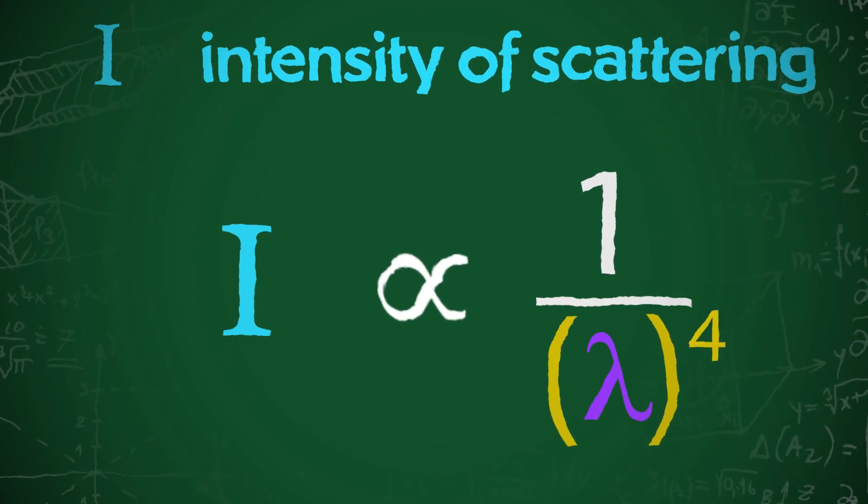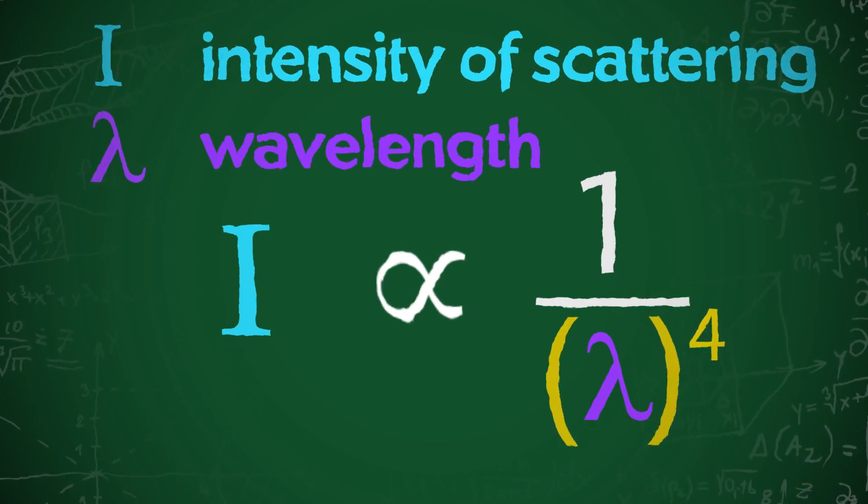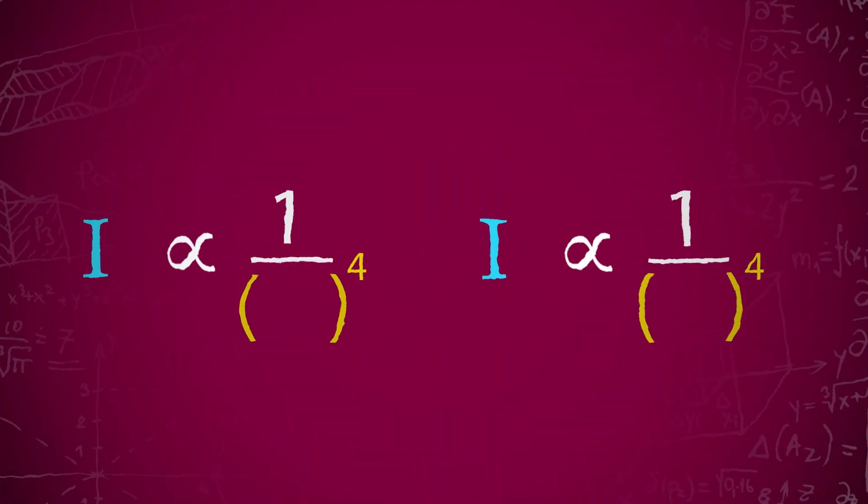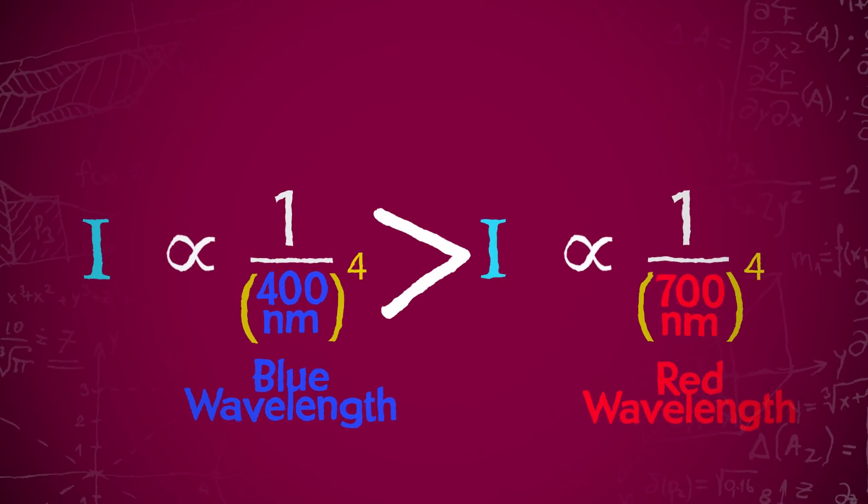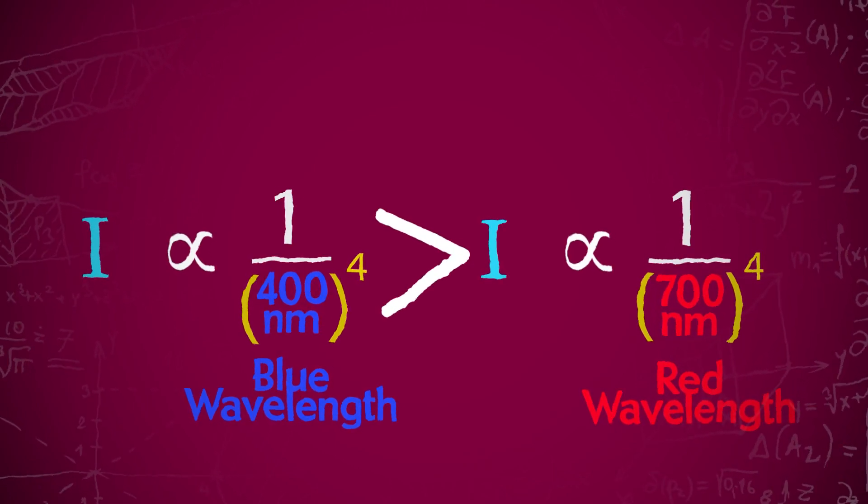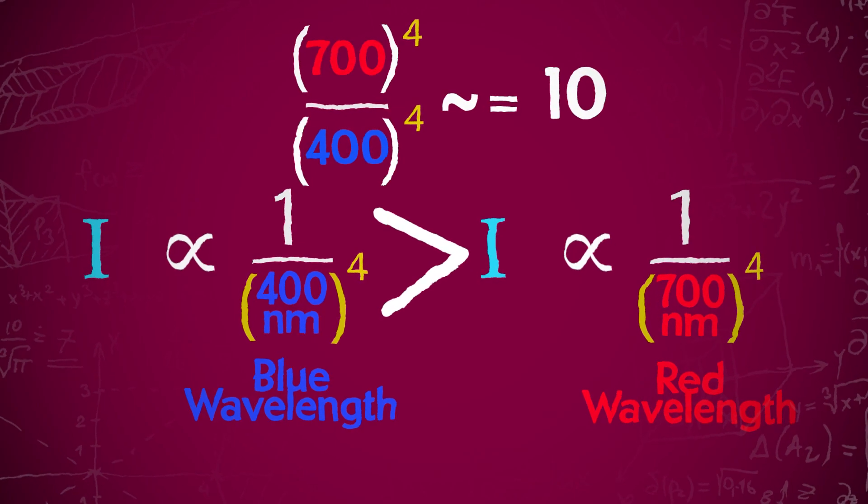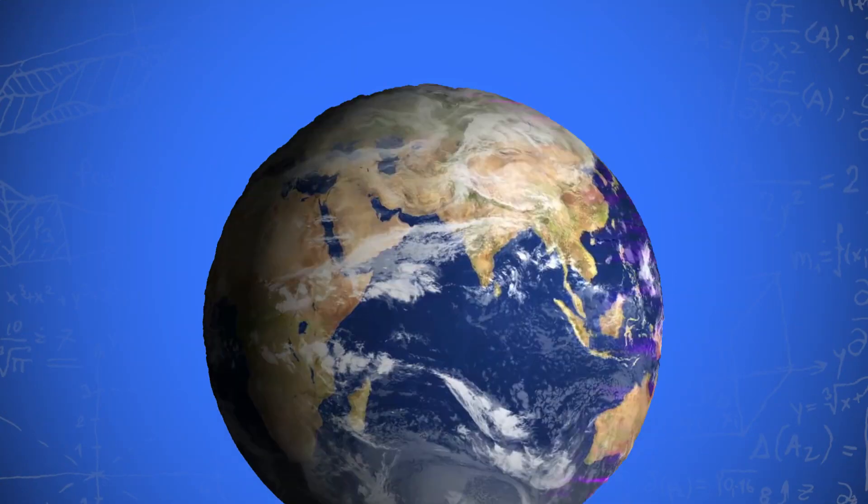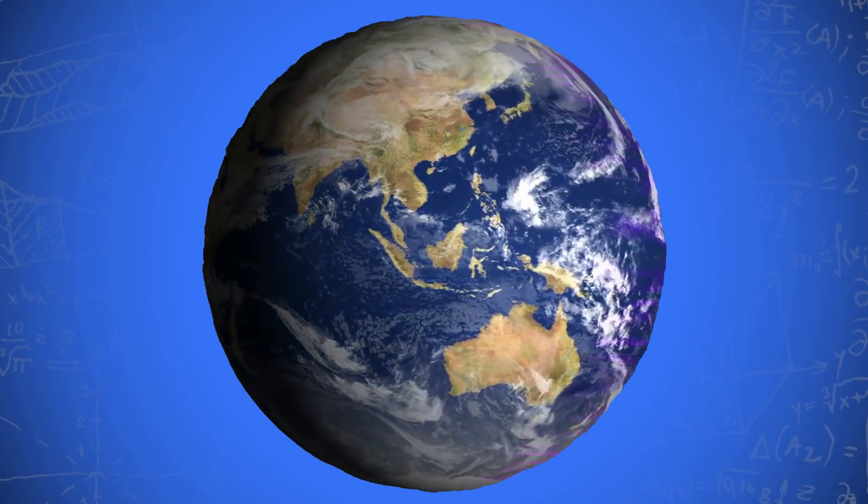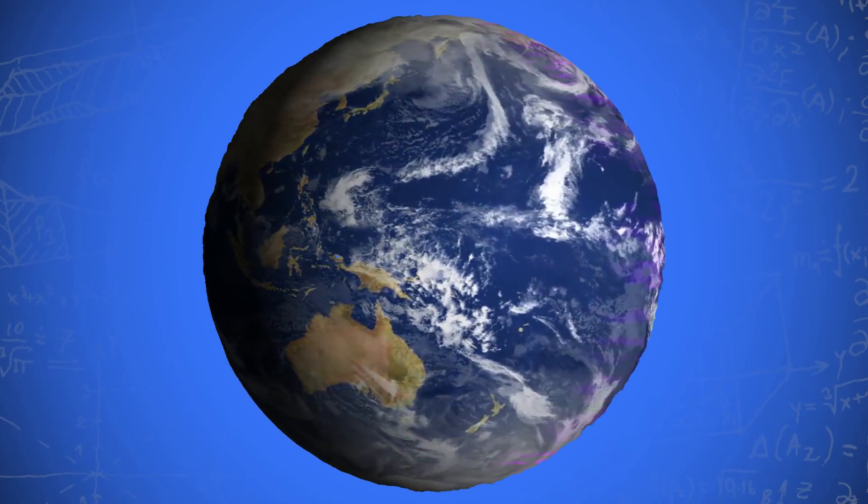Where I is the intensity of scattering and lambda is the wavelength. Now it is clear from the expression that when the value of lambda increases, the value of intensity of scattering decreases and vice versa. So the scattering at 400 nanometers is 10 times greater than the scattering at 700 nanometers. Therefore, violet and blue wavelengths scatter the most into the atmosphere. We see the sky as blue light.